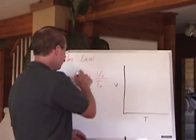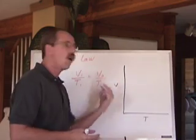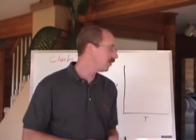Now look at this. V1 over T1 equals V2 over T2. So we can solve for one unknown here when we know three of the others.